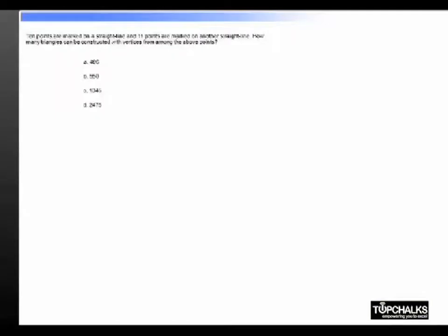This is a question based on permutation combinations. There are two straight lines. On one straight line there are ten points, and on the second straight line there are eleven points.